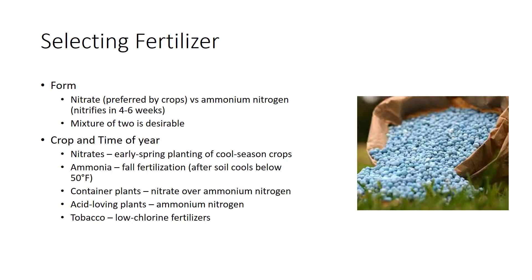Growers can choose from an array of fertilizers. Factors influencing the selection include crop, time of year, application method, and cost. For most crops, the form of the fertilizer is not critical. One choice is between nitrate and ammonium nitrogen. Plants absorb both ions, but the preference for most agricultural crops is for the nitrate form, and a mixture of the two is generally desirable. However, under warm, moist conditions, ammonium nitrogen nitrifies to nitrate nitrogen in 4 to 6 weeks, so ammonium and nitrate usually have similar effects on crop growth.